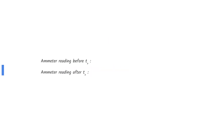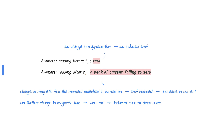Faraday's law states that the induced EMF is proportional to the rate of change of magnetic flux. This means EMF is induced only when there is a change in magnetic flux. The ammeter reading before time T is zero since there is no change in magnetic flux, and therefore no induced EMF. The moment the switch is turned on, there is a change in magnetic flux, which induces an EMF causing current to flow. However, the change in magnetic flux lasts only a very short time, so as it settles, the amount of current flowing will decrease.